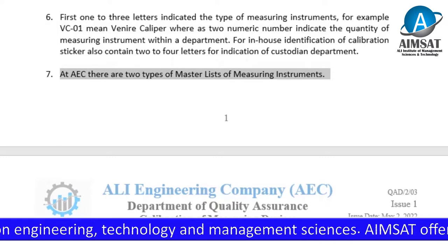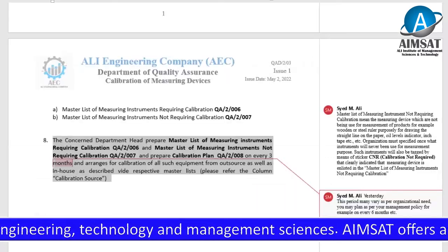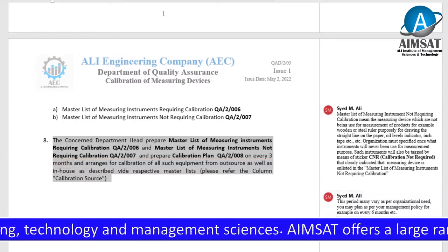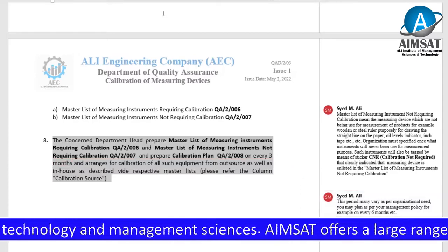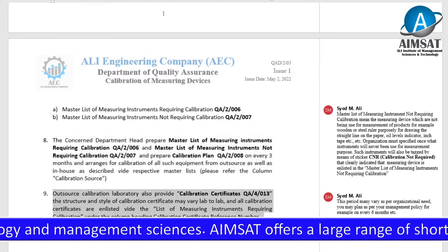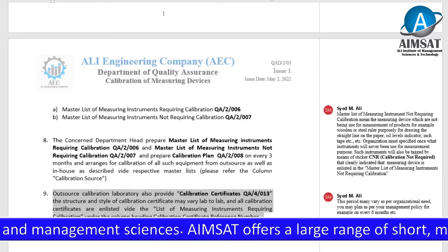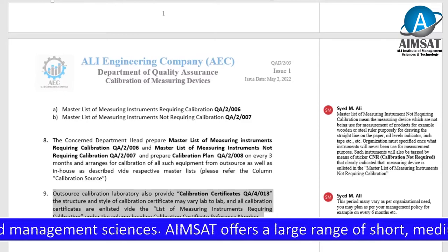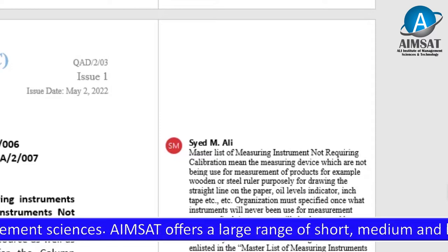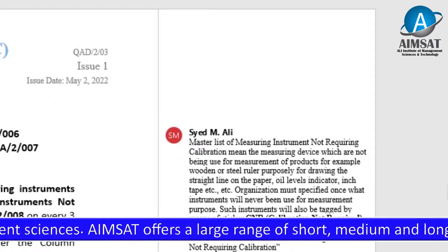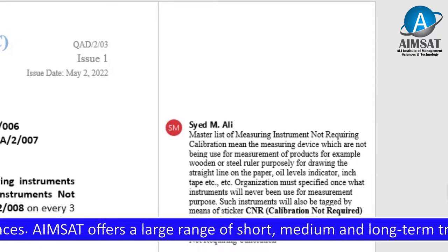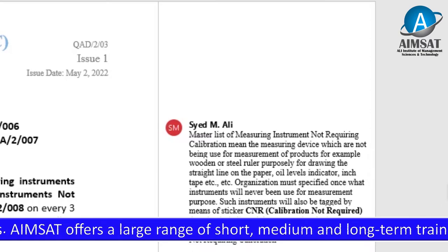At Ali Engineering Company, there are two types of master lists of measuring instruments: the master list of measuring instruments requiring calibration, and the master list of measuring instruments not requiring calibration. Instruments not requiring calibration refers to measuring devices not used for product measurement — for example, a wooden or steel ruler used only for drawing straight lines on paper.